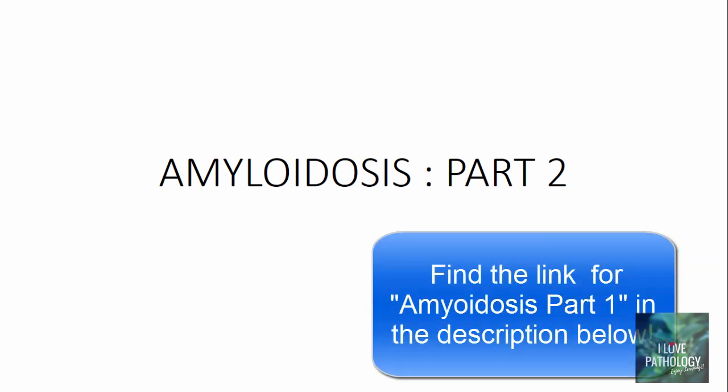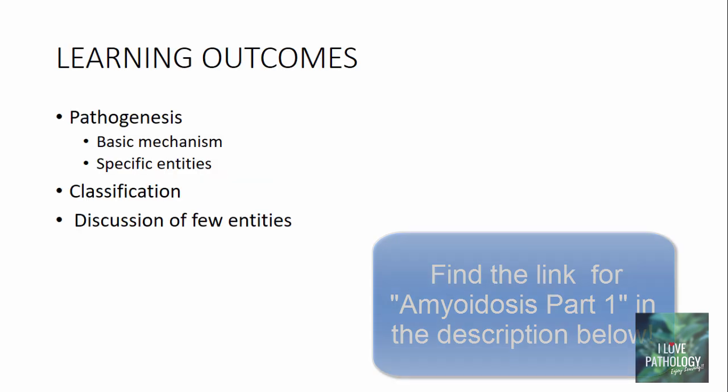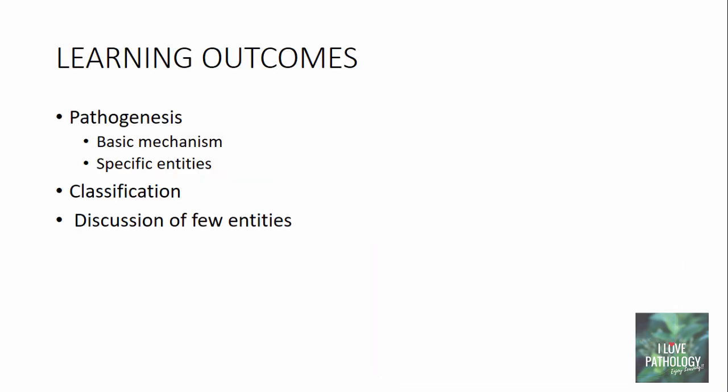Hi friends, welcome to this short tutorial from Pathology Made Simple at ilopathology.com. In today's topic I will be continuing with amyloidosis. If you are here for the first time, I suggest you view amyloidosis part 1, where we discussed the definition of amyloidosis and the properties of amyloid proteins. The learning outcomes for today's tutorial will be: understanding the basic mechanism of pathogenesis, how AL and AA types of amyloid and other types are formed, the classification of amyloidosis, and a few entities within that classification.